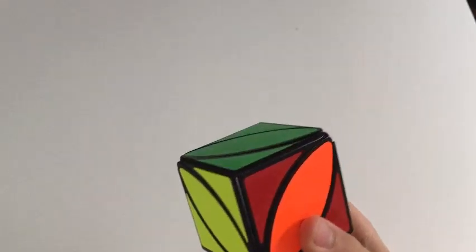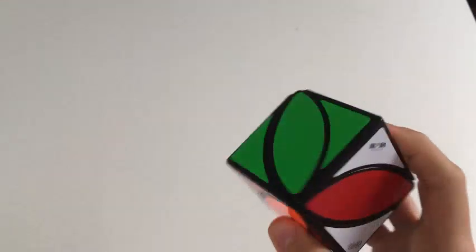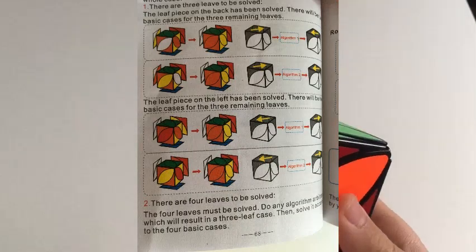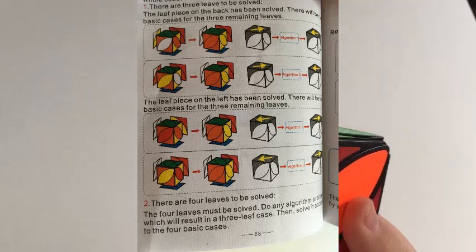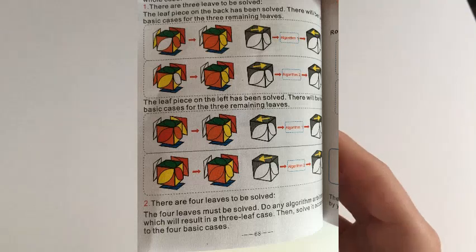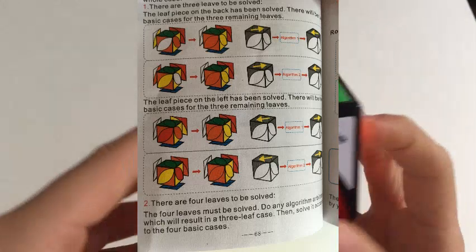Right, so there are a few cases that your cube could look like right now. That is on the screen now. Right, so my case has three leaf pieces that need to be solved. And my solved side, I'm going to put at the back.